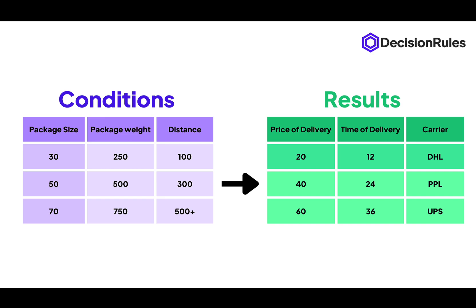Based on its size, weight, and the distance that it is going to travel, we will decide its price of delivery, the time in which the package will be delivered, and the carrier — the shipping company that is going to take care of the package delivery. Here we have one Decision Table split into two parts. One part is taking care of the conditions for the size, weight and the distance that the package is going to travel. The other one is deciding what will be the price, carrier and the delivery time for a specific combination of conditions.